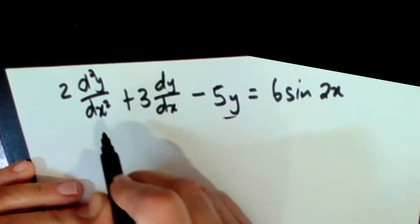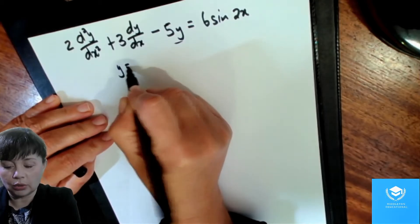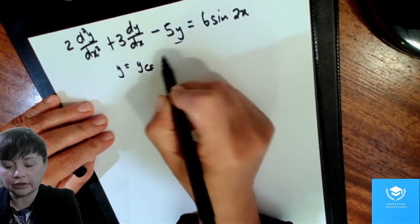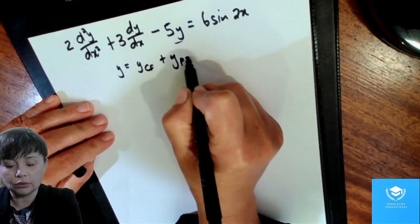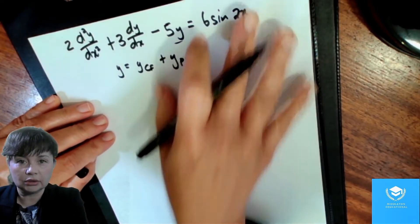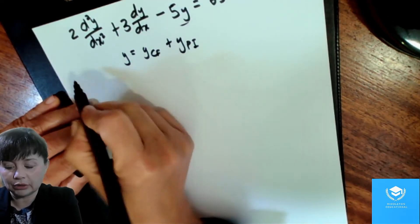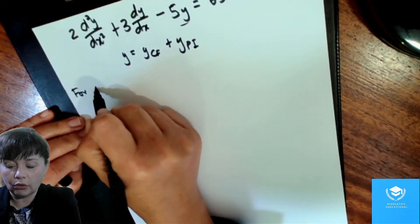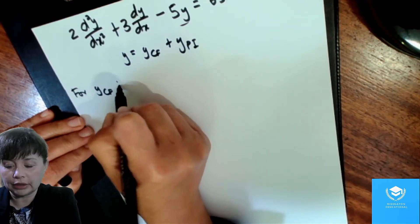So we know that our solution is going to be y equals your complementary function plus your particular integral. So if we find our complementary function,